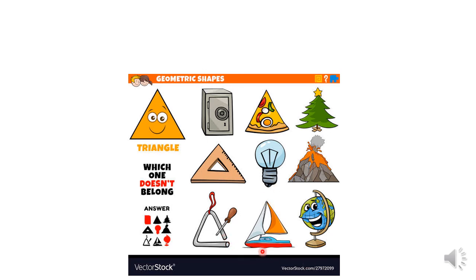The sail of the boat also has a triangle shape. And the last one — does it have a triangle shape? No, it doesn't.